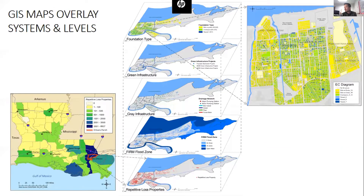I would surmise we are all GIS practitioners and understand how GIS can be utilized to do research. For example, from Ian McHarg, known as the father of GIS, his map overlay method for analyzing interconnected complex systems at varying levels of aggregation, seen here from the state to the individual properties.